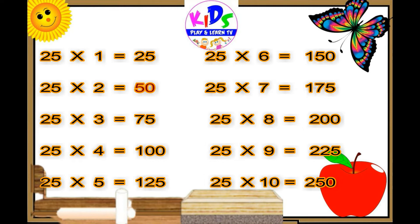Twenty-five sevens are one seventy-five. Twenty-five eights are two hundred. Twenty-five nines are two twenty-five. Twenty-five tens are two fifty.